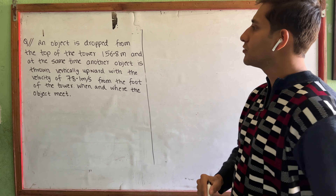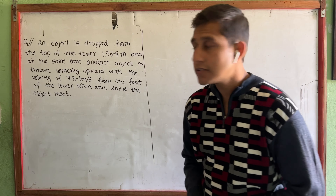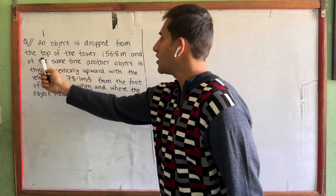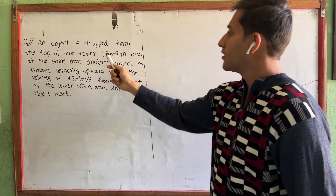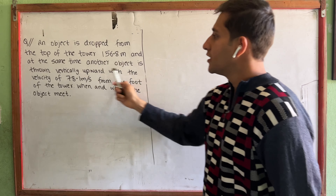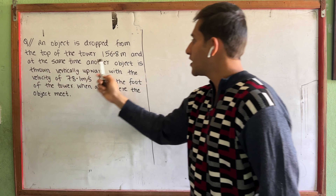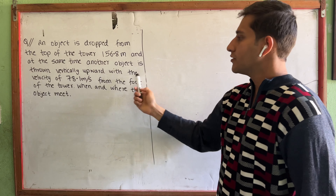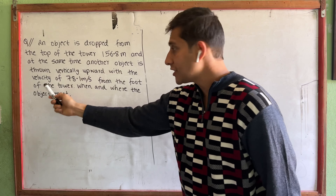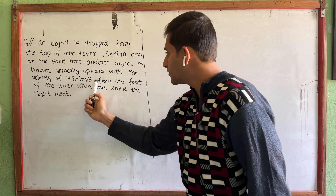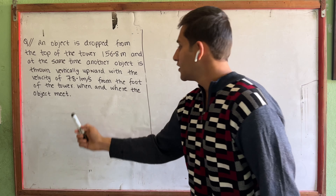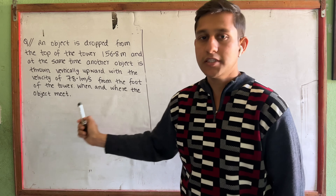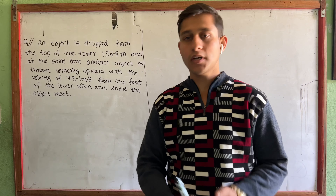So first question: an object is dropped from the top of a tower 156.8 meters, and at the same time another object is thrown vertically upward with the velocity of 78.1 meter per second from the foot of the tower. When and where will the objects meet?